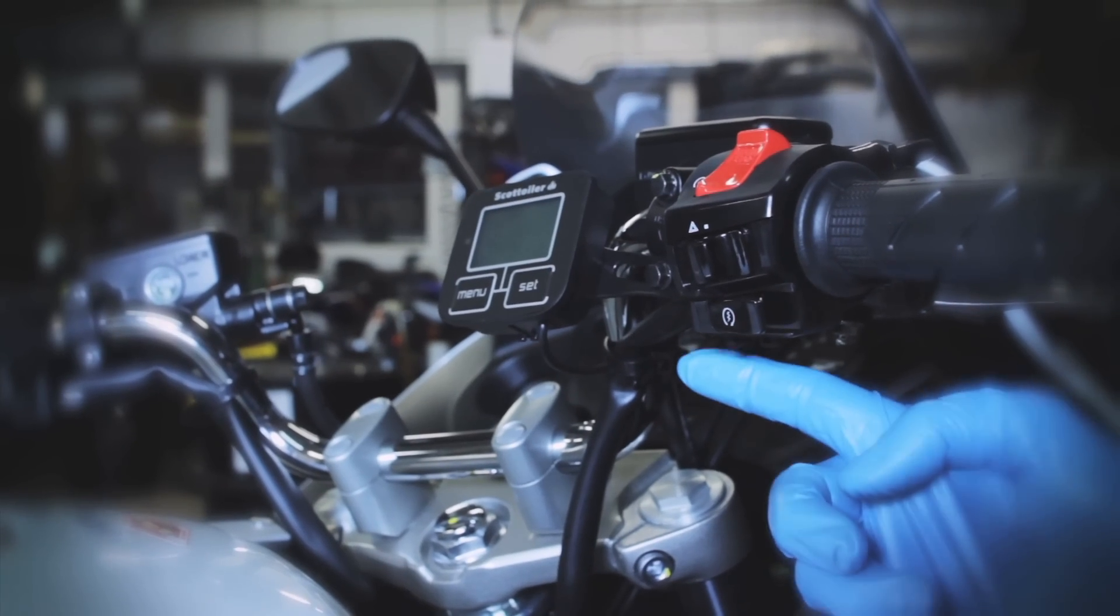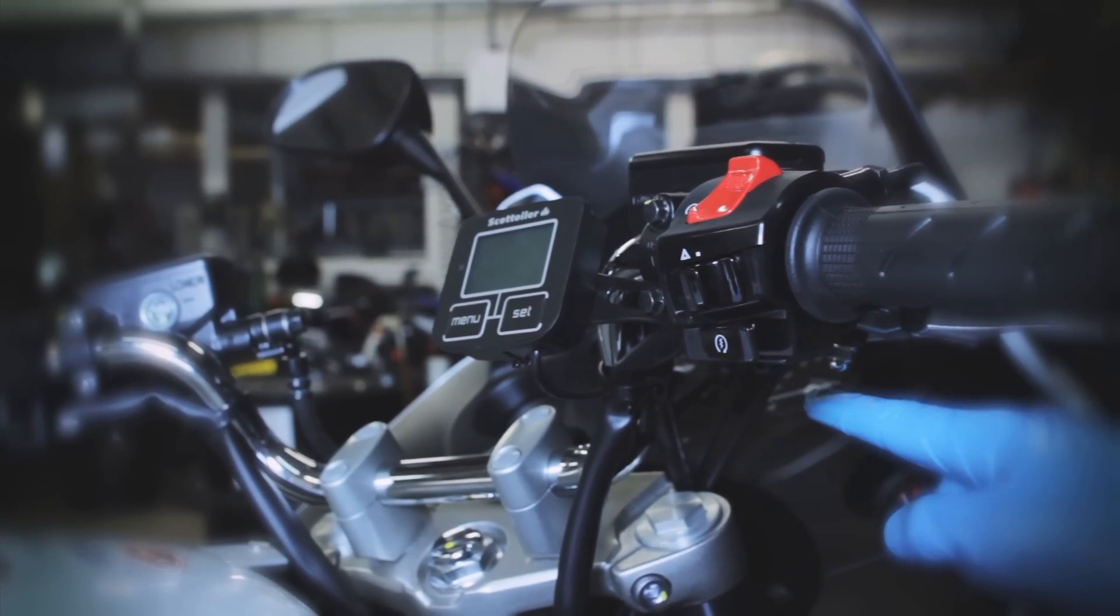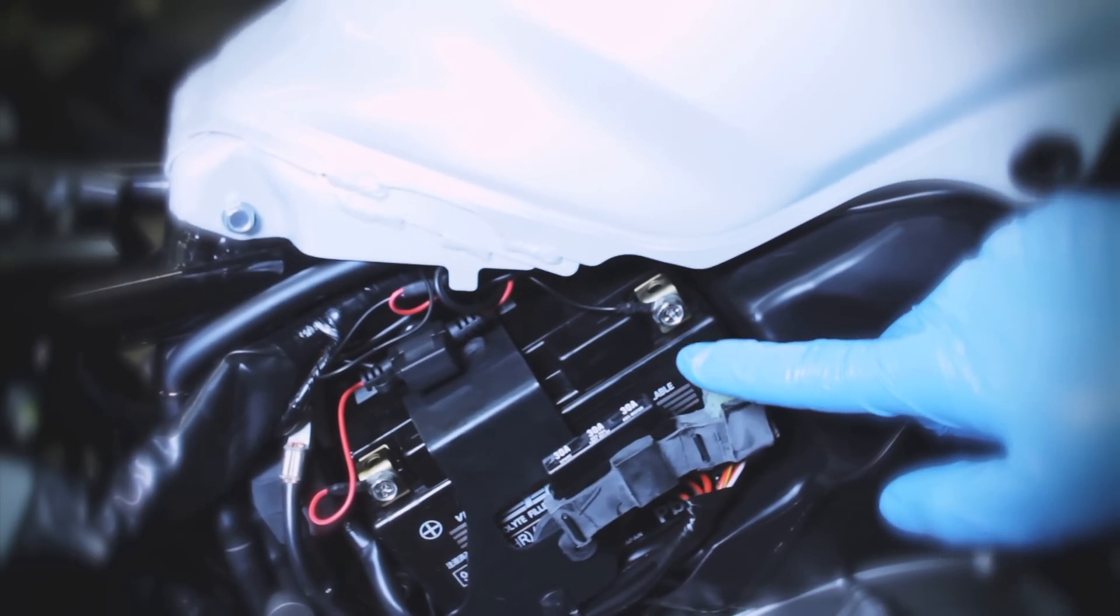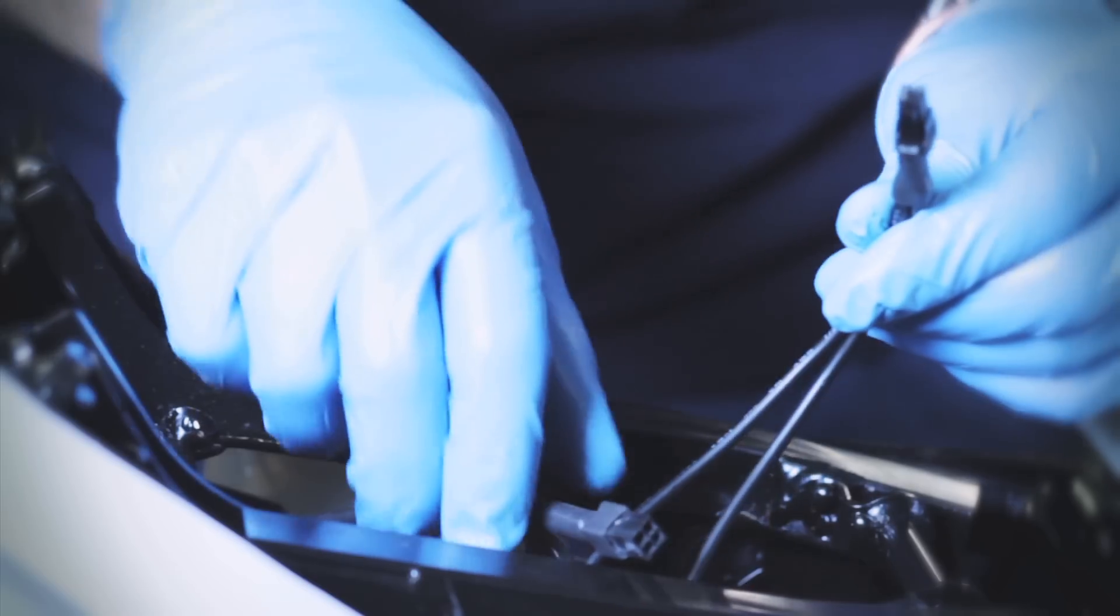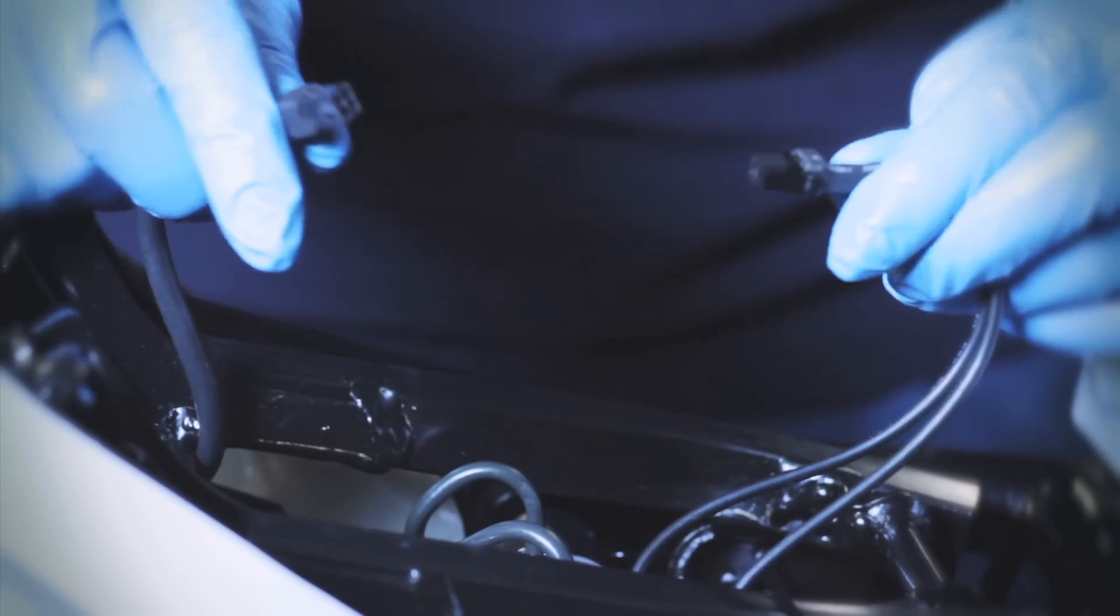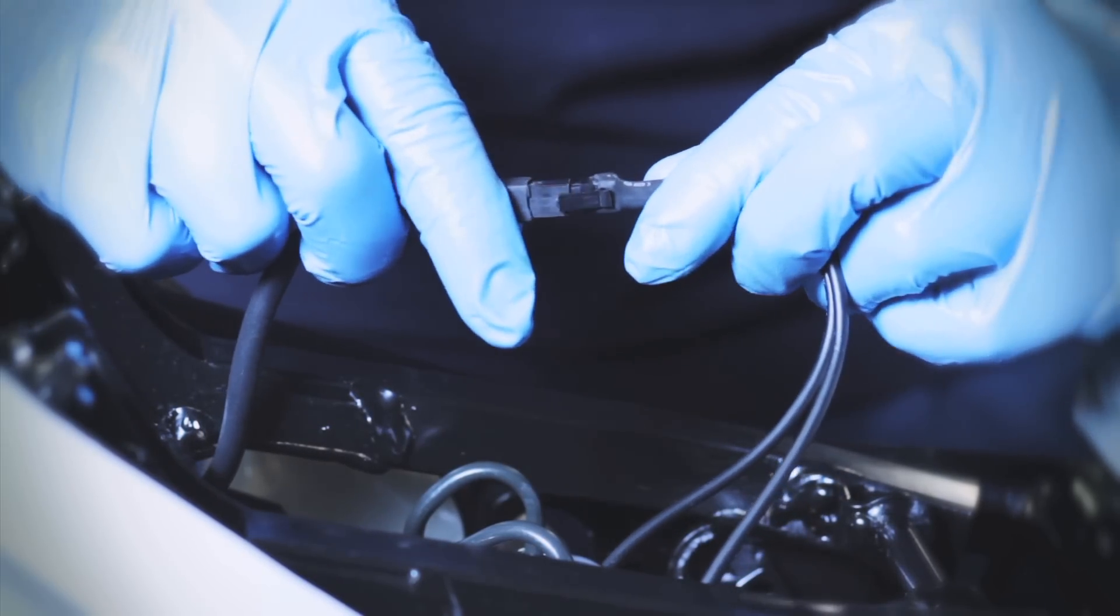Now, feed the battery cables from the display unit to the bike's battery and also connect to the reservoir. Be careful to avoid hot engine and exhaust components when routing the wiring, and be sure to use the supplied cable ties to attach the wires where necessary.